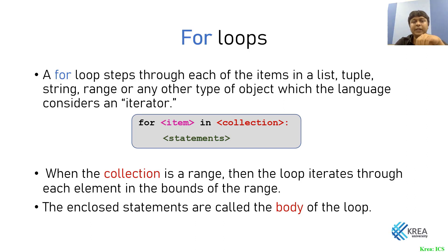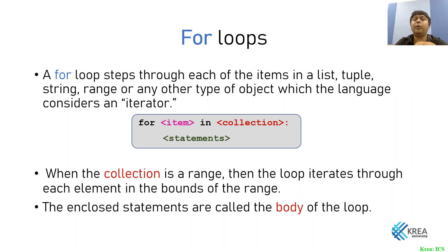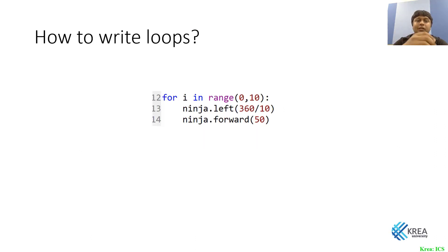A for loop steps through each item in a list, tuple, string, range, or any iterable object. The syntax is: 'for item in collection:' — where 'item' is a variable (it can be i, j, or any name), and 'collection' is, for example, a range. After the colon, the indented statements form the body of the loop — these are the statements that repeat each iteration.